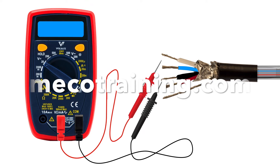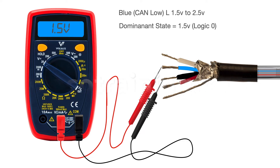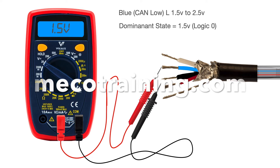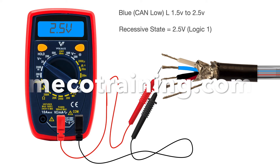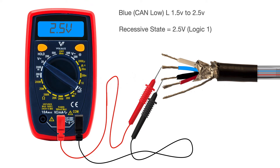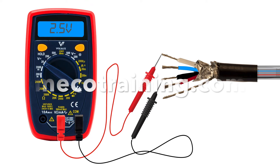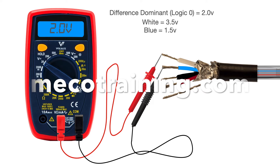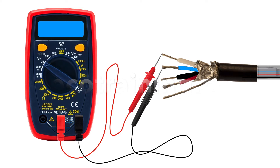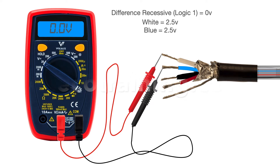Now let's see what's happening with the blue wire. Metering between the negative and the blue CAN Low wire will show a voltage of 1.5 volts when the bus is in a dominant state representing logic zero, and it will show a voltage of 2.5 volts in a recessive state. As this is a differential system, NMEA devices are only looking at the difference between the CAN High and CAN Low wires. We should see two volts between CAN Low and High when the bus is in a dominant state, and zero volts when the bus is in a recessive state.